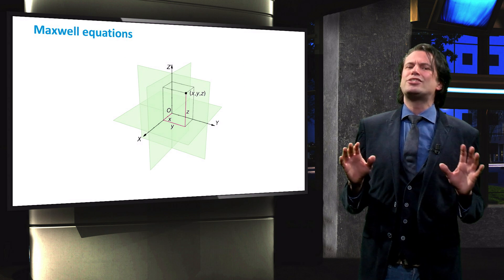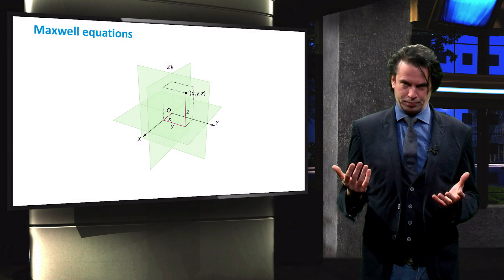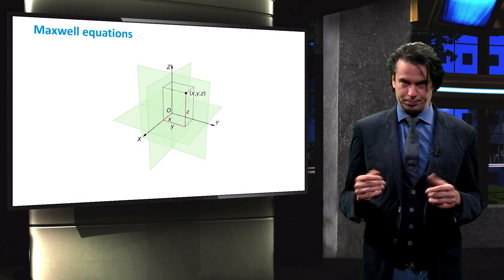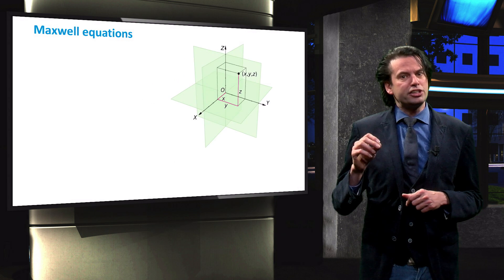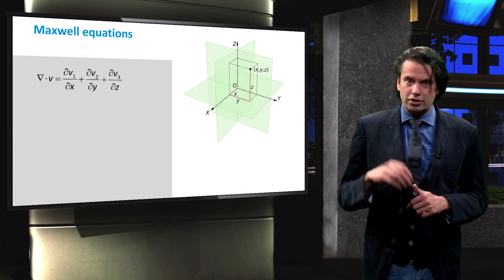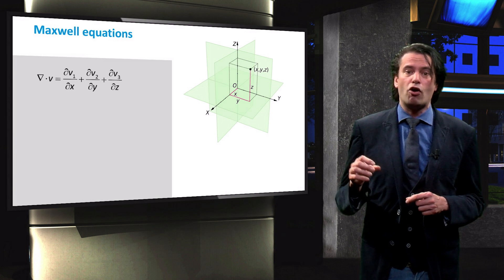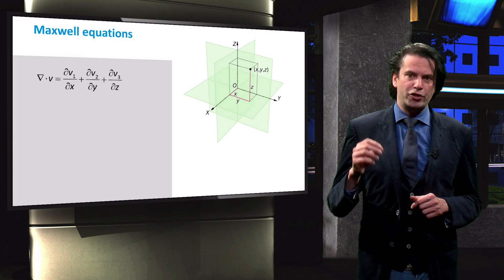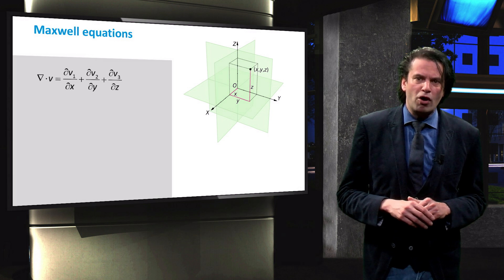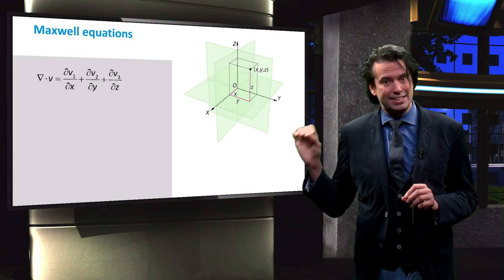Before looking into the Maxwell equations, we will discuss the concept of divergence. We use divergence to account for the three-dimensional nature of the fields. The divergence is a scalar function of a vector field, and is therefore proportional to the density of point sources of the field. The divergence of a random vector function v is the sum of the rates of change of v in the x, y, and z directions.